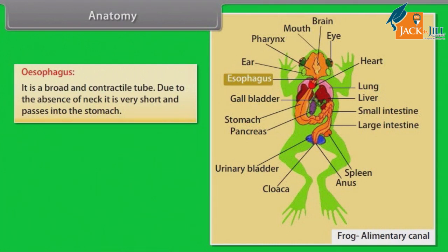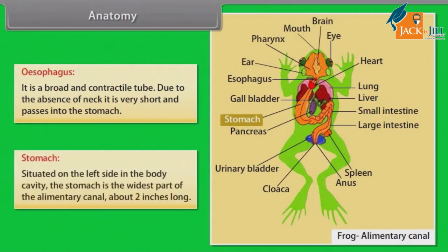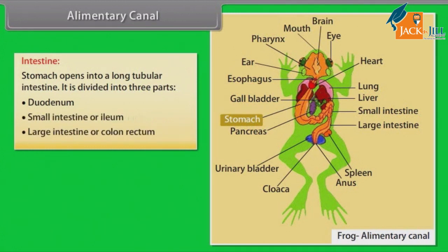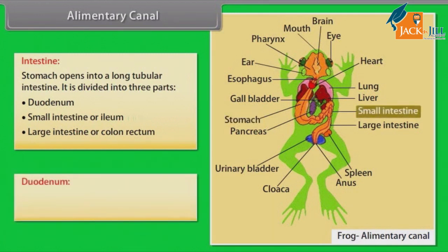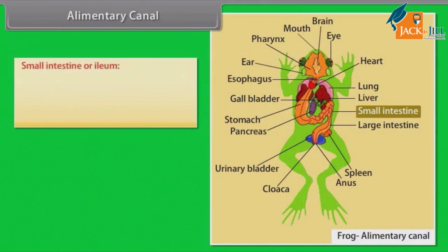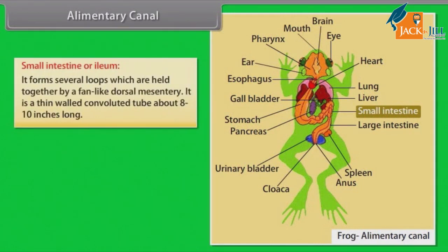Due to the absence of a neck, the oesophagus is very short and passes into the stomach. The stomach is situated on the left side of the body cavity and is the widest part of the alimentary canal, about two inches long. The stomach opens into a long tubular intestine, divided into three parts: duodenum, small intestine or ileum, and large intestine or colon/rectum. The duodenum is the anterior U-shaped part of the intestine, lying parallel to the stomach. The ileum forms several loops held together by a fan-like dorsal mesentery and is a thin-walled, convoluted tube about eight to ten inches long.